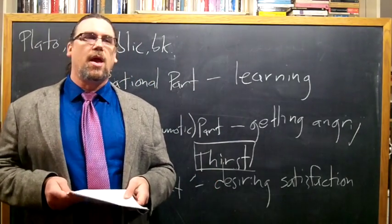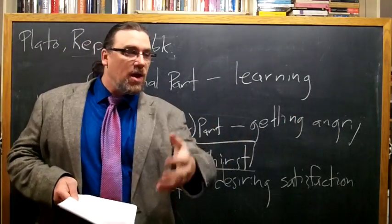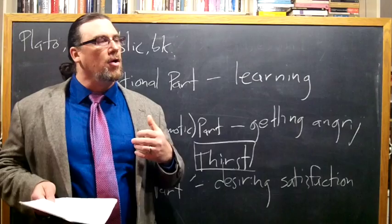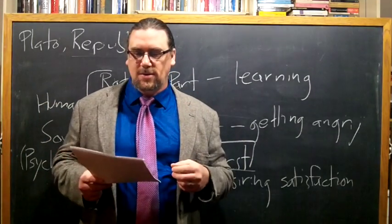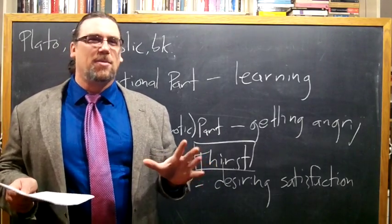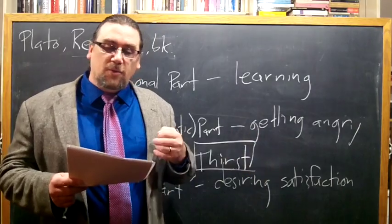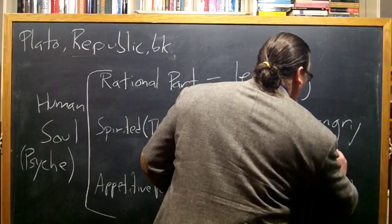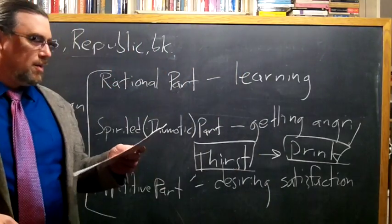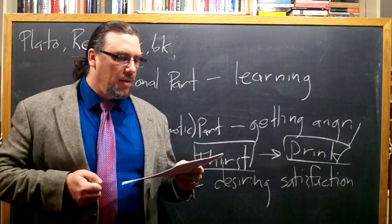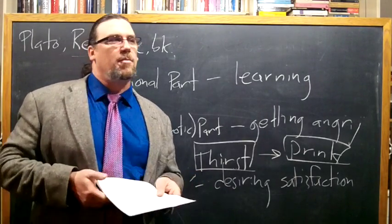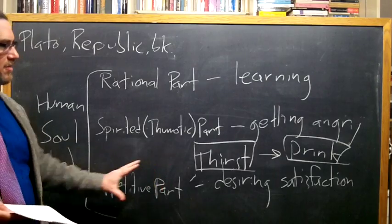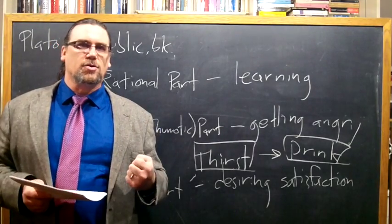So he says, hunger and thirst, the desires in general, willing and wishing. All of these you would refer to these classes already mentioned. You would say, the soul of him who's desiring is seeking after the object of his desires. Or that he's drawing to himself the thing that he wishes to possess. Now, what about unwillingness and dislike, absence of desire? These could be referred to an opposite class of repulsion and rejection. And now let's come back to thirst again. So, when you're thirsty, you have some active desire saying, drink that, drink that, drink that. Same thing with hunger. He says, let's take the class of hunger. Hunger is for something to put in your mouth and eat. Now, of course, we distinguish between different kinds of hunger, but he's not going to do that here. So, he says, the object of one is food, the object of the other is drink. So, thirst is very simply about drink. It's a desire.